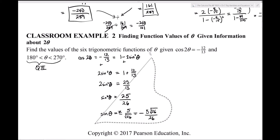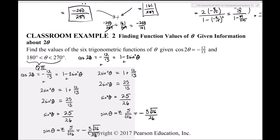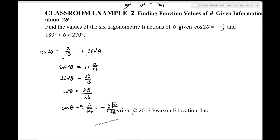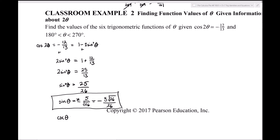Since cosecant is the reciprocal of sine, csc(θ) = -√26/5. That gives us two of the six trig functions — sine and cosecant.